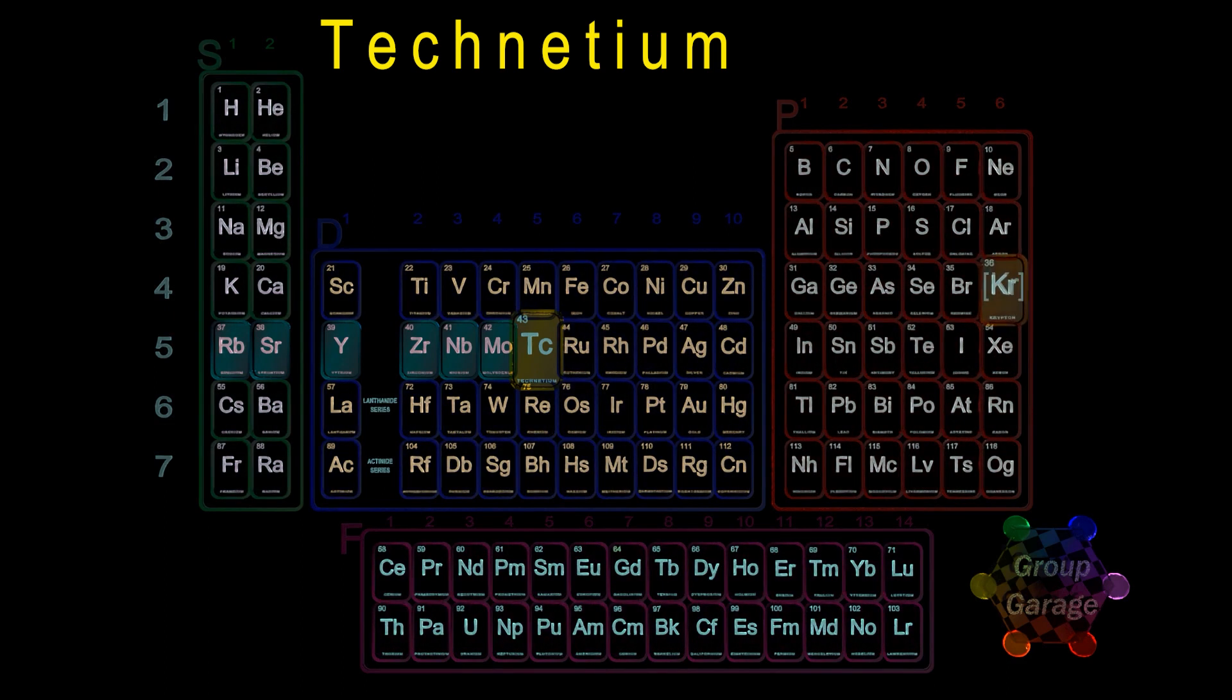Since the previous noble gas has a full shell from period 4, we write krypton, shorthand Kr.